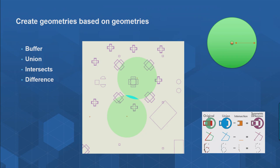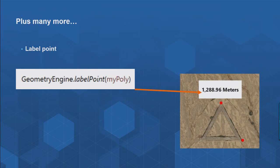That's an example of how you might use buffer and intersects inside a runtime application. To summarize, it's client-side processing — very quick, so even large numbers of re-projects happen efficiently on your CPU. There's also a label point method: if you've drawn a polygon and want to place a text marker symbol to label it, you can pass in the polygon and get back a useful anchor point for placing that label in your application.